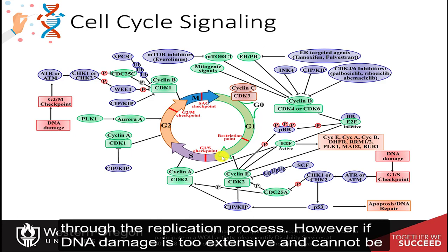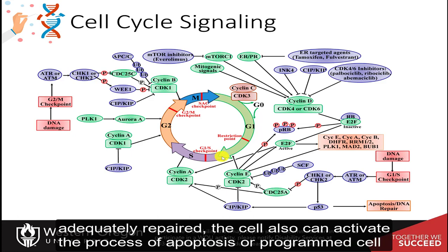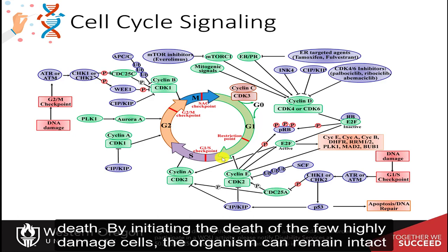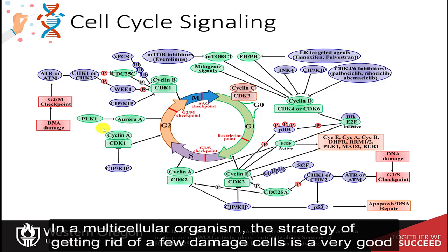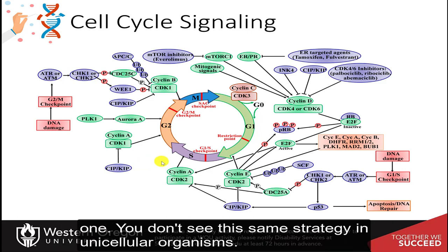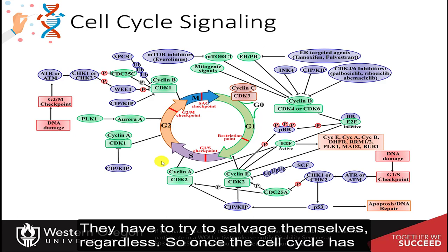However, if DNA damage is too extensive and cannot be adequately repaired, the cell can also activate the process of apoptosis, or programmed cell death. By initiating the death of a few highly damaged cells, the organism can remain intact and healthy rather than risk the harmful effects of cellular mutations. In a multicellular organism, the strategy of getting rid of a few damaged cells is a very good one. You don't see this same strategy in unicellular organisms — they have to try to salvage themselves regardless.